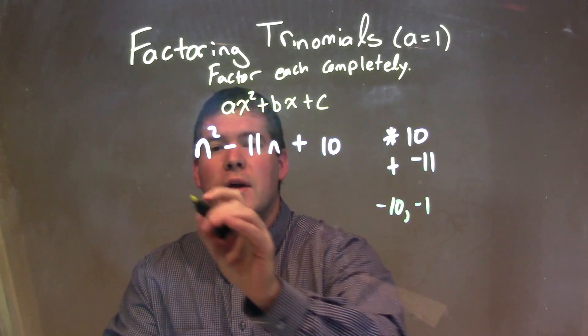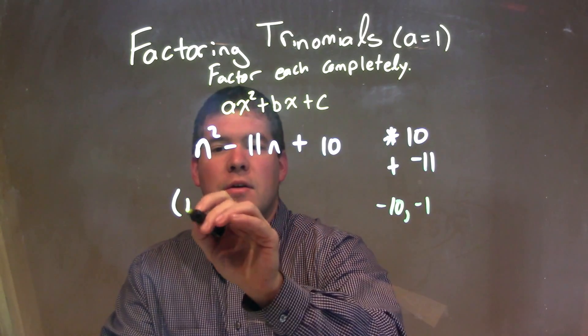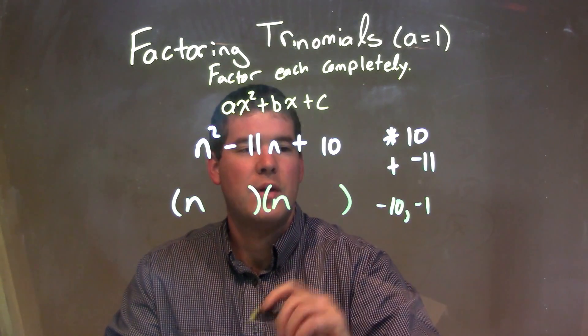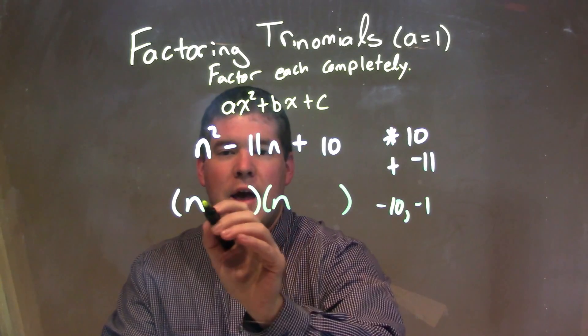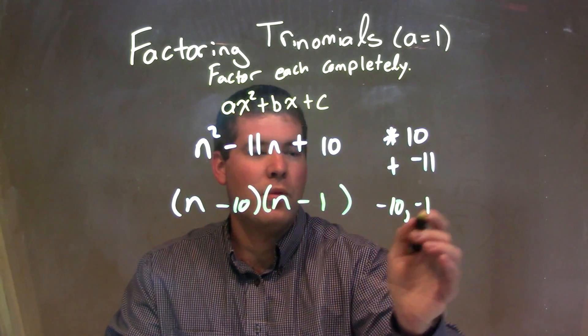So we can break this down to be two parentheses here, like this. And we'll just take the first one: n minus the 10, and then n minus the 1.